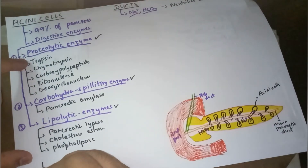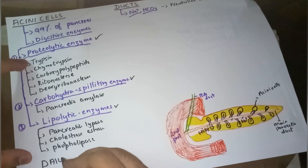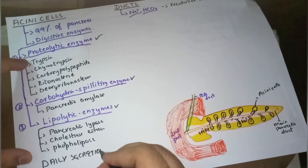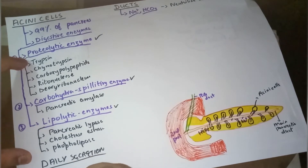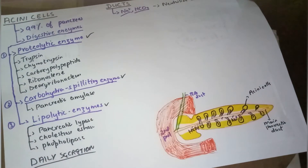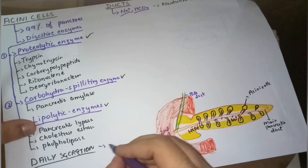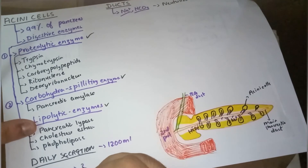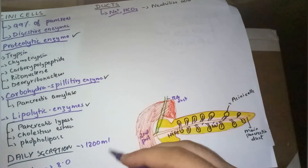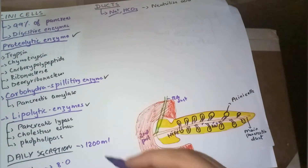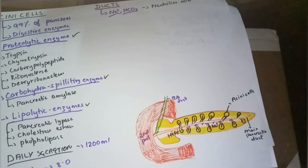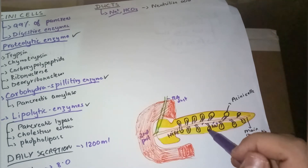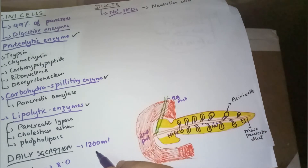The daily secretion of the pancreas is about 1200 ml, and the pH of the secretion is about 8.0. If secretion exceeds this amount, the pancreas starts to lose its function due to extra load, so we must try to avoid over-stimulating this secretion.